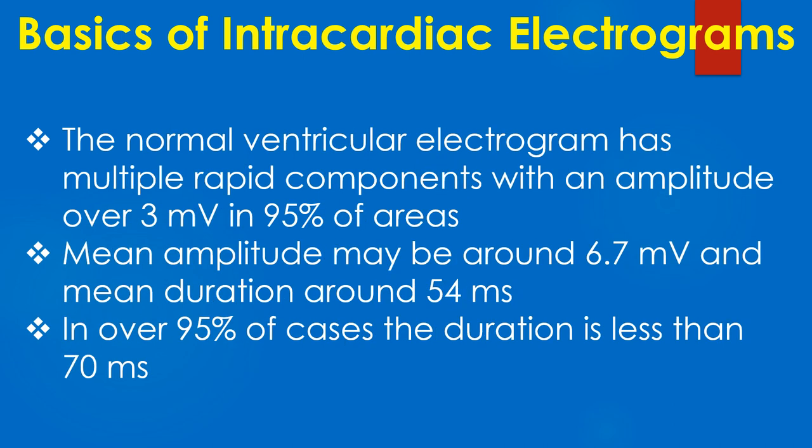The normal ventricular electrogram has multiple rapid components with an amplitude over 3 mV in 95% of areas. Mean amplitude may be around 6.7 mV and mean duration around 54 ms. In over 95% of cases, the duration is less than 70 ms.